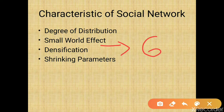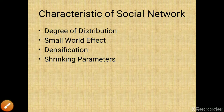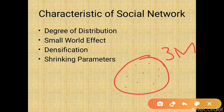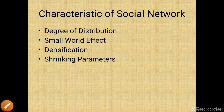The next characteristic is densification. Research has concluded that networks become more dense over time, with average degree increasing such that the number of edges grows super-linearly with the number of nodes. For example, consider a mobile network: today there are some nodes in an area, but after three months more nodes are added, so the graph gets denser over time. That is known as densification.